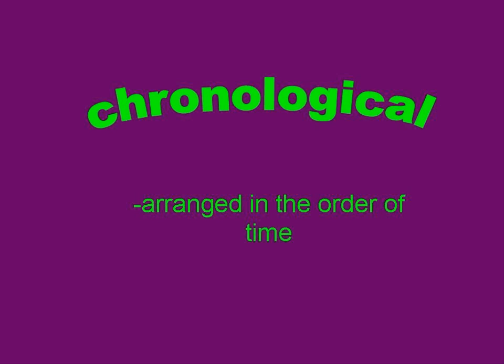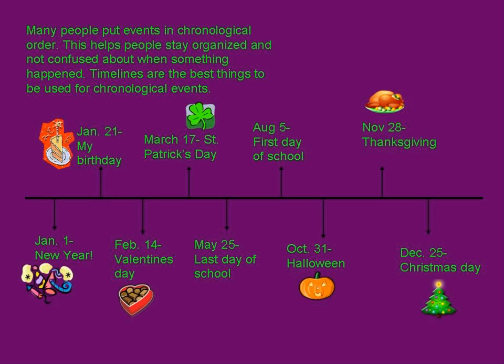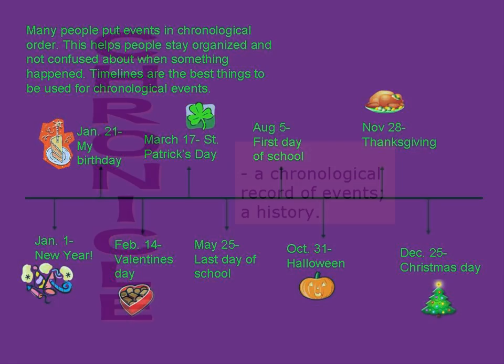Take chronological, for example. When you arrange events in chronological order, you are arranging them in the correct time that they happened. Many people use chronological order when they are telling stories or writing timelines. Putting events in chronological order will help you stay organized and keep confusion down to a minimum.